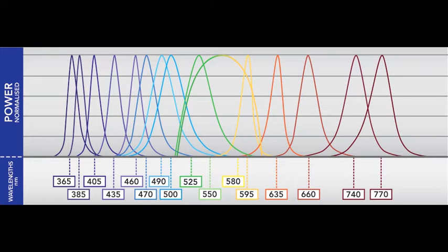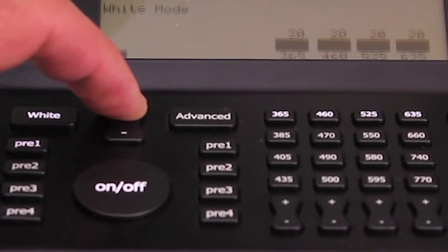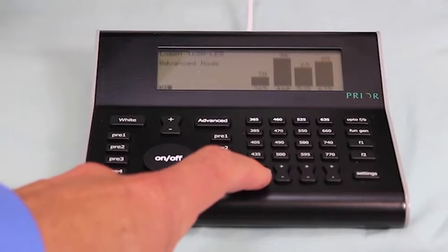The Lumen 1600 provides instant on-off control — no shutters are required. Each LED in the Lumen 1600 has an expected lifetime of over 25,000 hours.